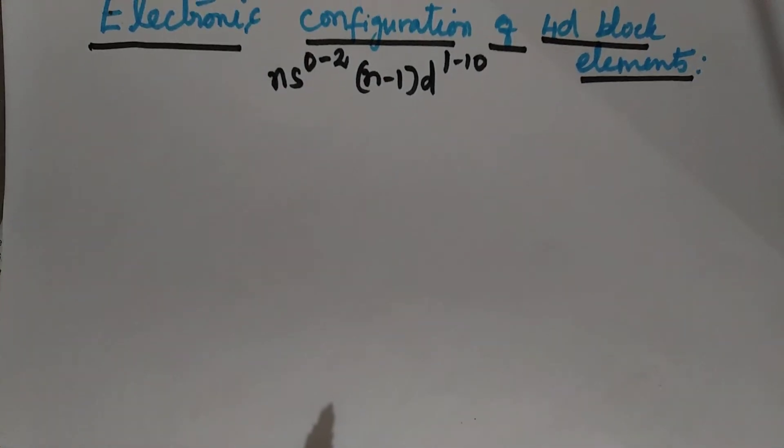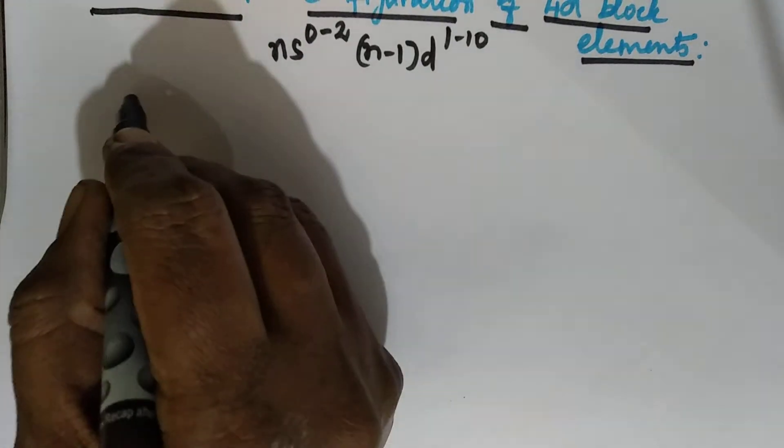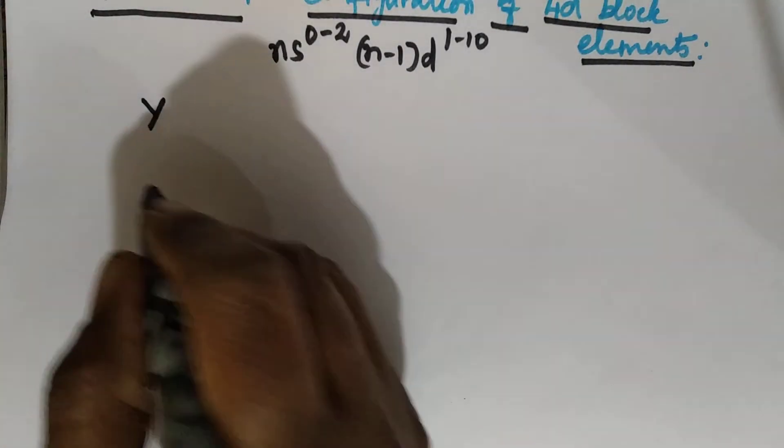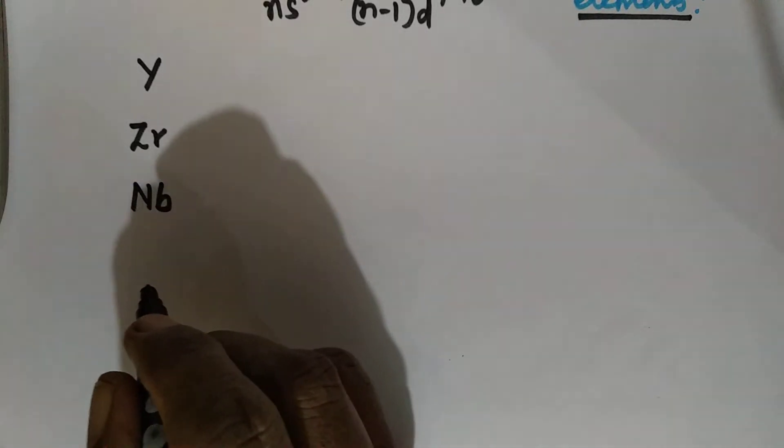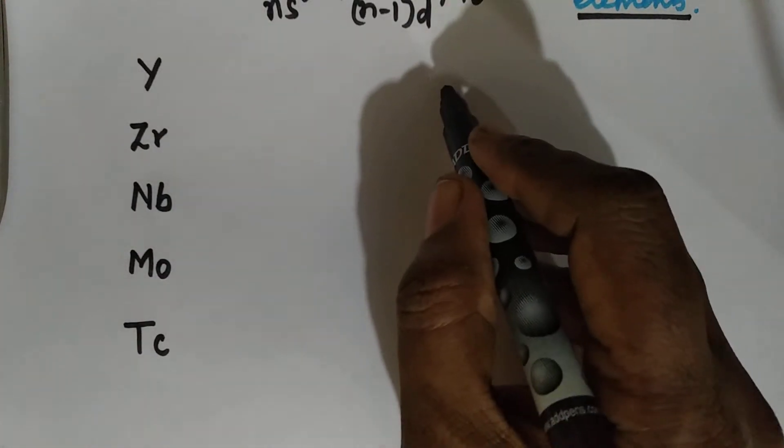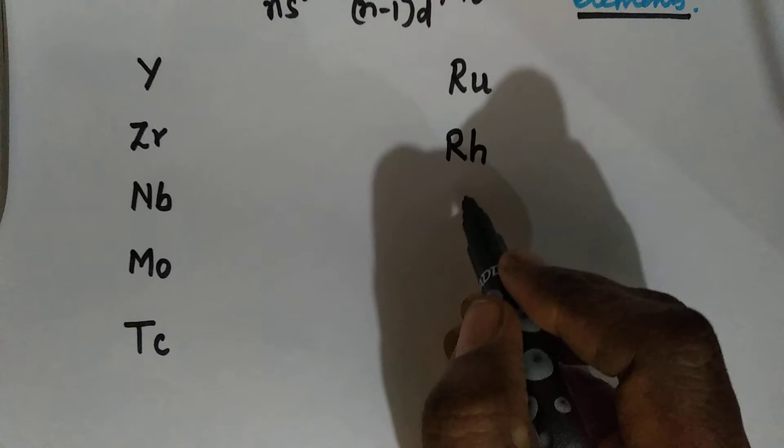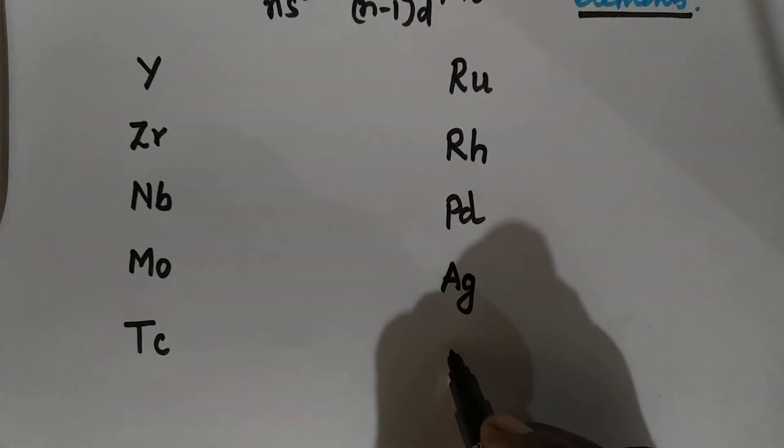Now we write down the names of the elements of the 4D block. The 4D block elements go with yttrium, please note down the symbols also while you are writing: yttrium, zirconium, niobium, molybdenum, technetium, ruthenium, rhodium, palladium, silver, then cadmium.